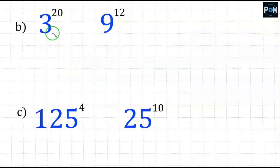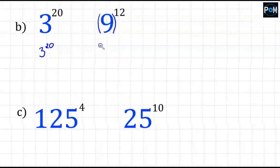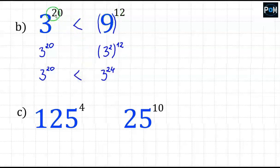In example B, to compare, we do the same as in example A. The common base for 3 and 9 would be the number 3. We probably don't need to recall the table. 3 to the power of 20 won't change at all. Instead of the number 9, I put 3 to the power of 2, and rewrite the exponent 12. So 3 to the power of 20 remains unchanged, and on the other side I get 3 to some power — multiplying gives 24. When I have 3 to the power of 20 and 3 to the power of 24, this number is definitely larger.